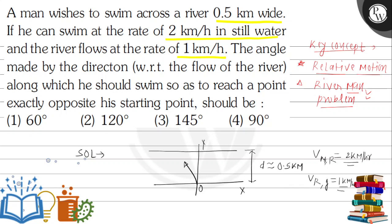The man starts swimming by making some angle with the river flow direction. This is vrg (velocity of river with respect to ground), and this is vmr — velocity of man with respect to river — at angle theta. This is the opposite point A, directly opposite to the starting point.